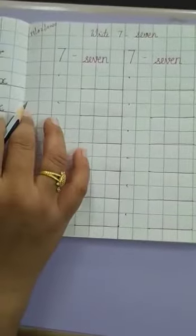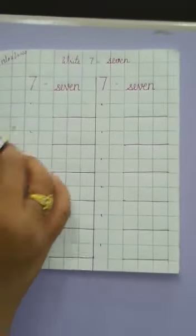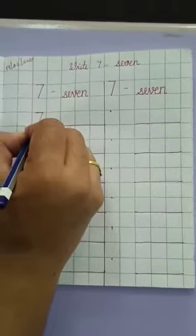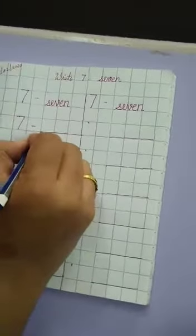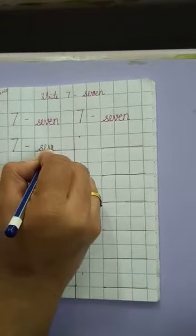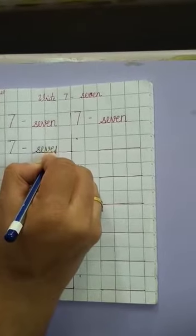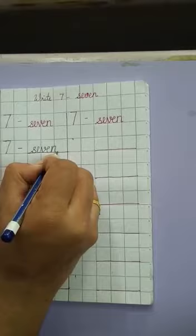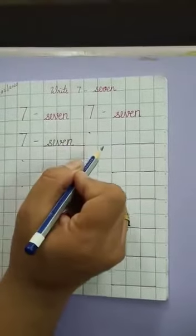Now see how to write 7. 7 number dash S-E-V-E-N 7. You don't have to put your pencil in the back.